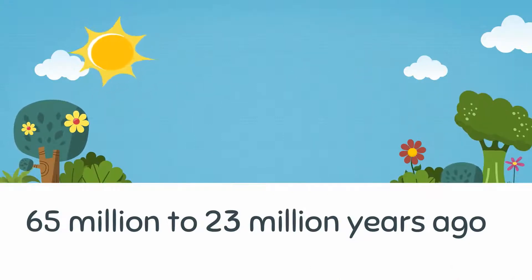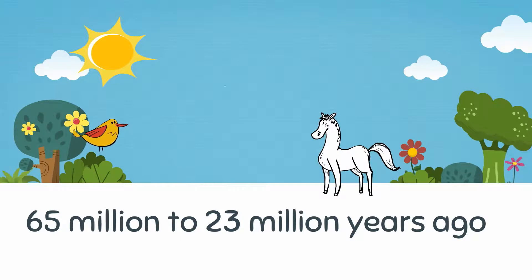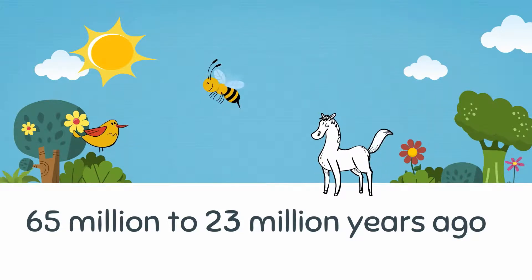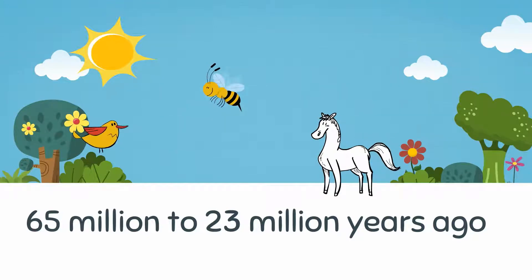At first the climate was very tropical and warm. This resulted in mammals, birds, and insects scattering throughout the world. Mammals prospered during this time.